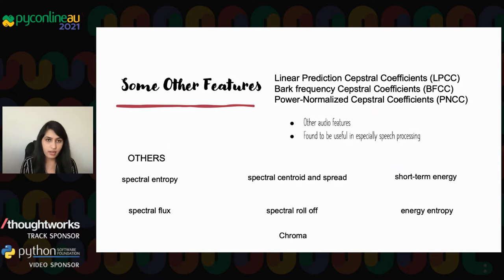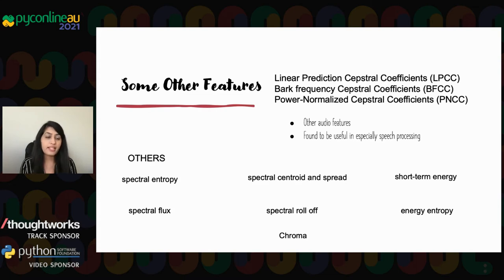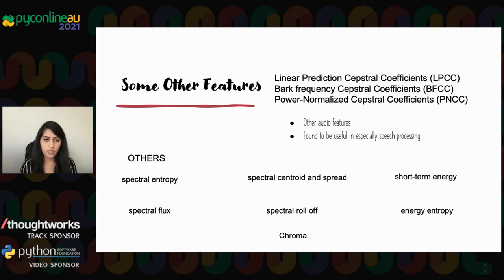Other features of great importance, especially in speech processing, include Linear Prediction Cepstral Coefficients, Bark Frequency Cepstral Coefficients, and Power Normalized Cepstral Coefficients. There are also spectral-related features like spectral entropy, flux, zero-crossing rate, and chroma features — which represent the tonal content of a musical audio signal, making them very useful when classifying music-related content.